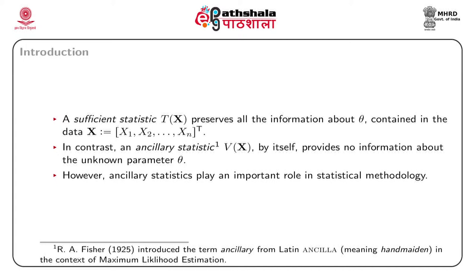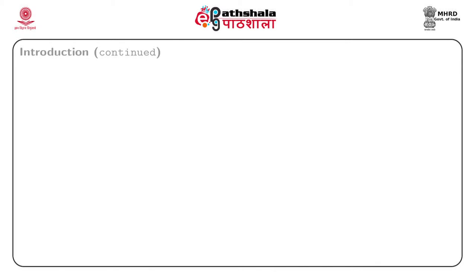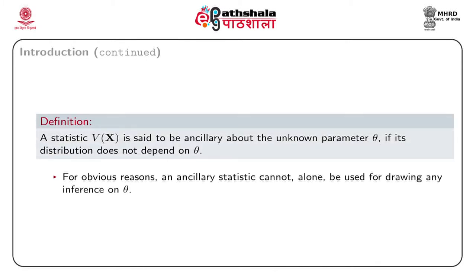Individually, an ancillary statistic would not provide any information about theta, but such statistics can play useful roles in statistical methodology. The term ancillary statistic, from the Latin ancilla meaning hand-maiden, was introduced by R.A. Fisher in the year 1925 in the context of maximum likelihood estimation. A statistic V(x) whose distribution does not depend on the parameter theta is called ancillary for theta.